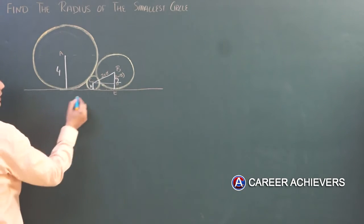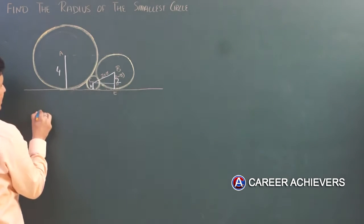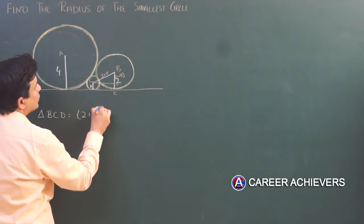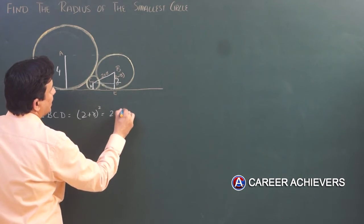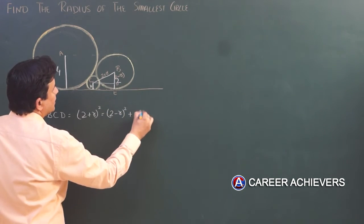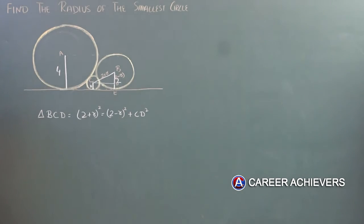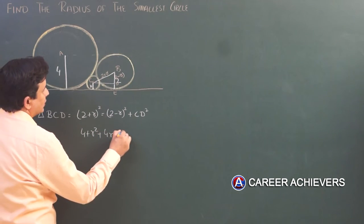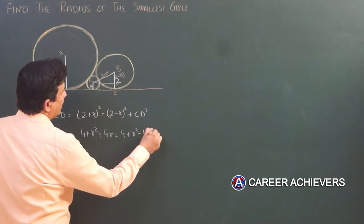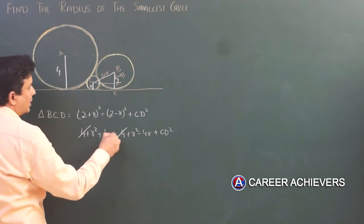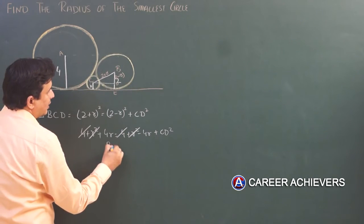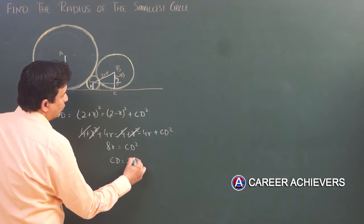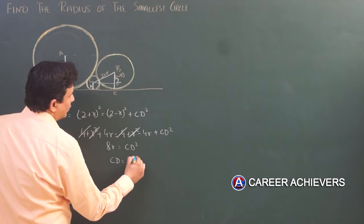So in this triangle, what did we name it? In triangle BCD, if you look, then (2+R)² equals (2-R)² plus CD². Simplifying: 4 + R² + 4R equals 4 + R² - 4R + CD². Cross multiply, 8R equals CD².